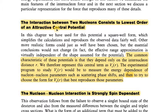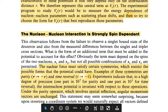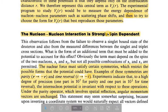The second property: The nucleon-nucleon interaction is strongly spin-dependent. The nuclear force must satisfy certain symmetries which restrict the possible forms that the potential could have. Examples of these symmetries are parity (r → -r) and time reversal (t → -t).